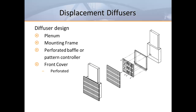Now let's look at the construction features of displacement diffusers. Most displacement diffusers have a few parts in common. They all include a rear plenum assembly and a faceplate that's perforated with either round or rectangular holes. While some manufacturers simply provide perforated baffles or splash plates inside their products, other manufacturers choose to include a central baffle fitted with adjustable air pattern controllers.